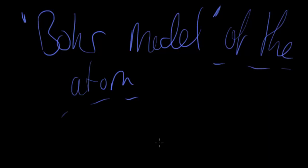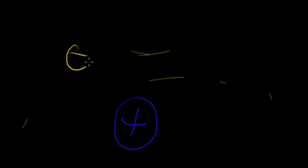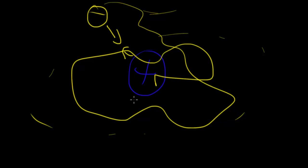Bohr made this model because there were certain things Rutherford's model did not account for. Specifically: if you have a positive charge in the middle and negative charges in a cloud around it, opposites attract — so why don't all the electrons just spiral down into the centre of the nucleus and the atom collapses? We knew electrons were not in the nucleus but around it, so there had to be an explanation.